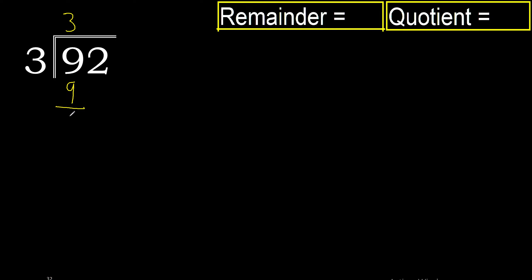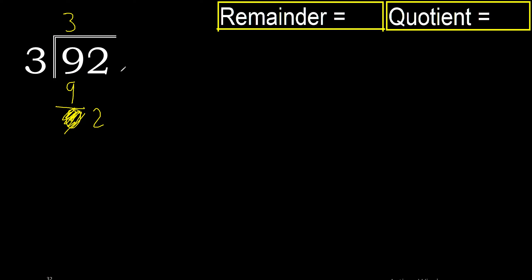9 minus 9 is 0. Bring down the 2. 2 is less than 3, therefore we need another digit.